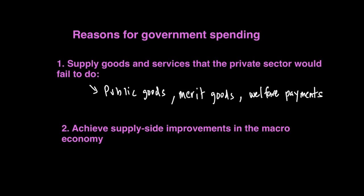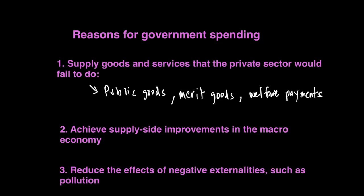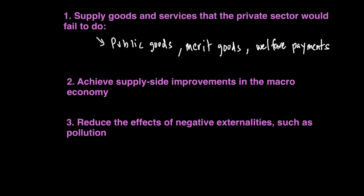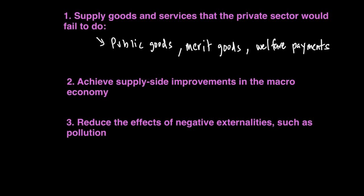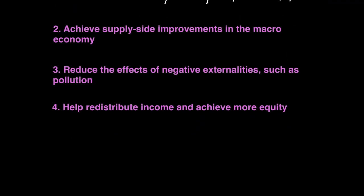Thirdly, government spending can reduce negative externalities such as pollution and other negative aspects of consumption. Another key government expenditure is to help redistribute income and achieve more equity in society. This is done through welfare payments like unemployment benefits.